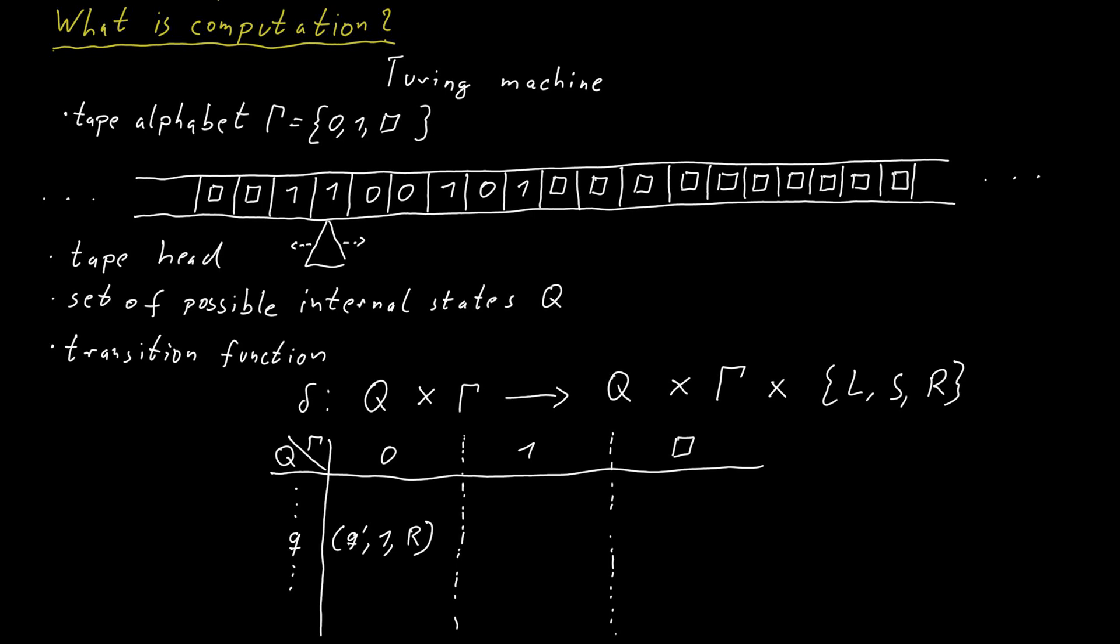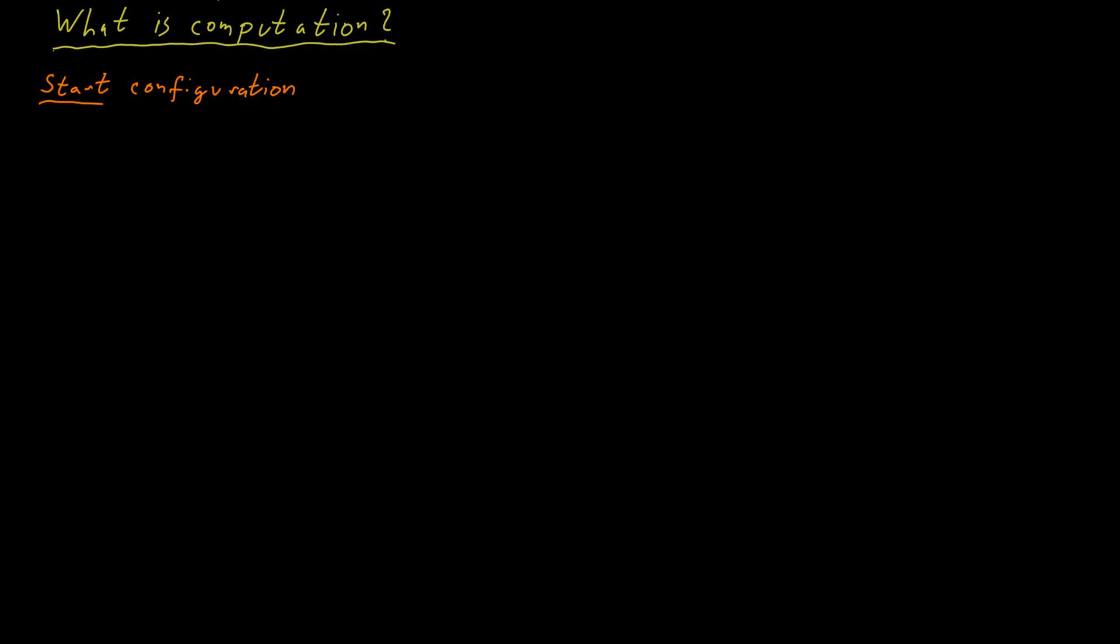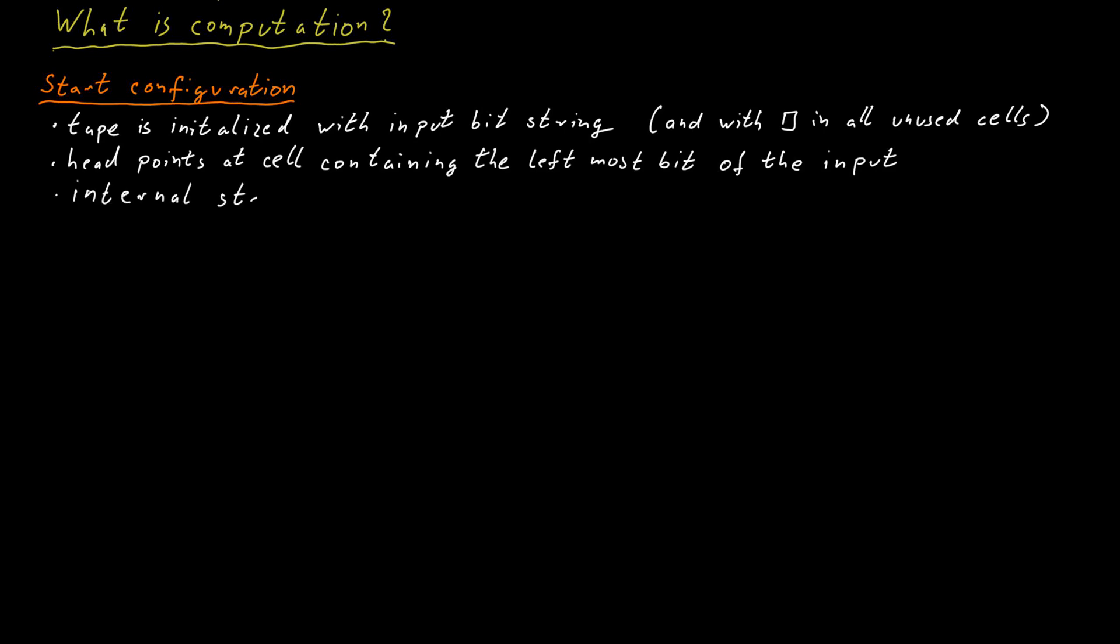Now here's how the Turing machine does its computation. At the beginning we have the start configuration of the Turing machine. The start configuration is one where the tape, the contents of the tape is initialized with the input. So we have some input which is a 0, 1 bit string and it's just written on the tape, on the cells on the tape. And the head of the Turing machine initially points to the leftmost bit of the input. This is our convention. Furthermore, there's a specific state in the set of states Q, which is the starting state of the Turing machine. Let's call it Q start. So this is how the Turing machine is initialized. The input is written on the tape, the head points to the leftmost bit of the input and the internal state of the machine is Q start.